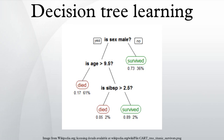Some techniques, often called ensemble methods, construct more than one decision tree. Bagging decision trees, an early ensemble method, builds multiple decision trees by repeatedly resampling training data with replacement, and voting the trees for a consensus prediction. A random forest classifier uses a number of decision trees in order to improve the classification rate. Boosted trees can be used for regression type and classification type problems. Rotation forest is a method in which every decision tree is trained by first applying principal component analysis on a random subset of the input features.